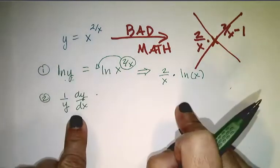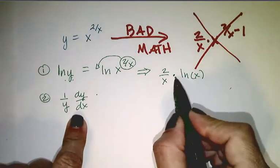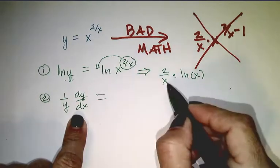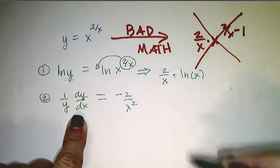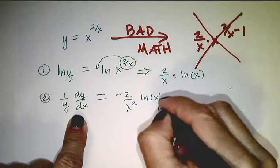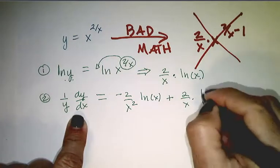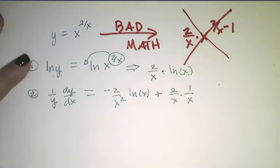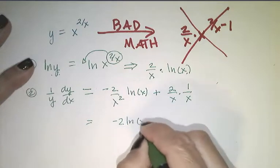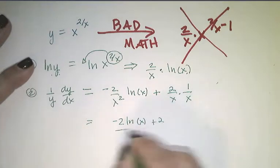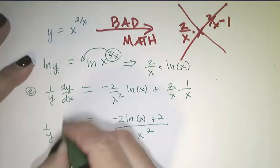Now step two: we take the derivative with respect to x of both sides using the product rule. One over y times dy/dx equals negative 2 over x squared times the natural log of x plus 2 over x times 1 over x. Cleaning this up: 1 over y times dy/dx equals negative 2 ln(x) plus 2, all over x squared.